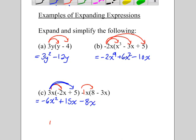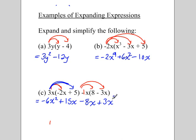Negative x or negative 1x if you prefer times 8 is negative 8x. And then be careful with your signs on this last one. Negative 1x times negative 3x, where x times x is x squared, gives us positive 3x squared.